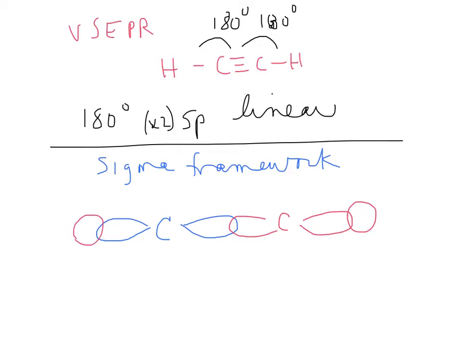And then you label S, SP, SP, SP, SP, and S. So there's the end-on overlap, which is the sigma bond here, here, and here.